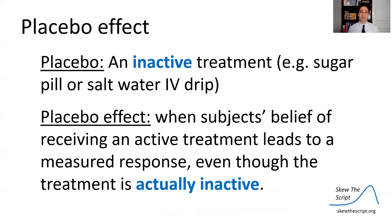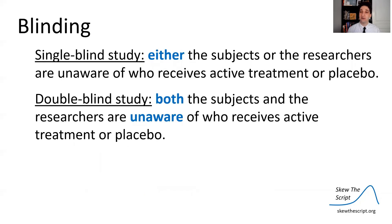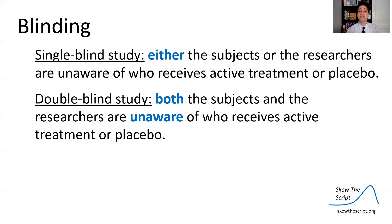We have to control for the placebo effect when experimenting with humans. A placebo is an inactive treatment — a sugar pill or a saltwater IV drip are common examples. The placebo effect is when a subject's belief in receiving active treatment leads to a measured response even though the treatment is actually inactive. We control for this through blinding. In a single blind study, either the subjects or the researchers are unaware of who receives active treatment or placebo. In a double blind study, both subjects and researchers are unaware. Blinding subjects prevents the placebo effect; blinding researchers prevents confounding bias in their evaluations.